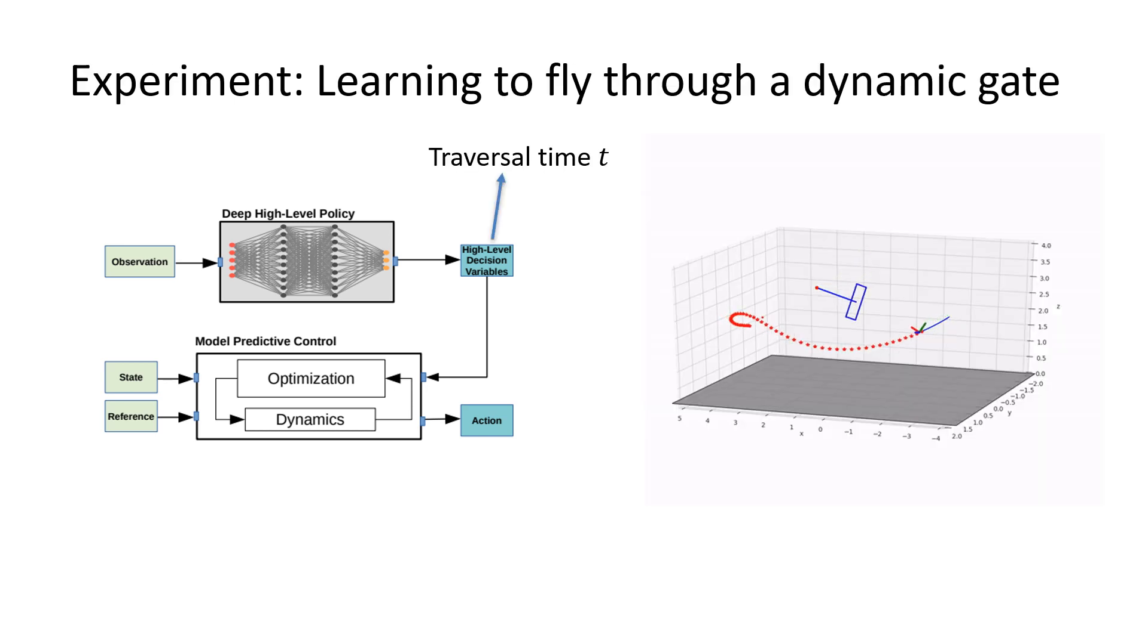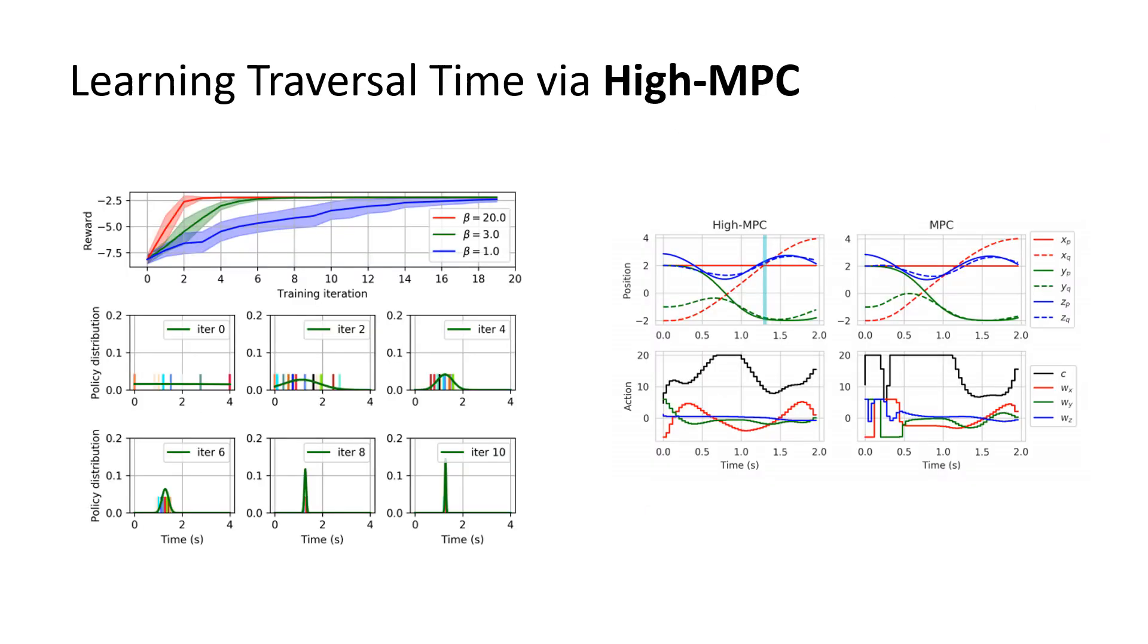We evaluate the performance of our approach by solving a challenging robotic control problem, where the task is to fly a quadrotor through a dynamic gate. In this case, the travel time is the high-level decision variable that has to be learned.